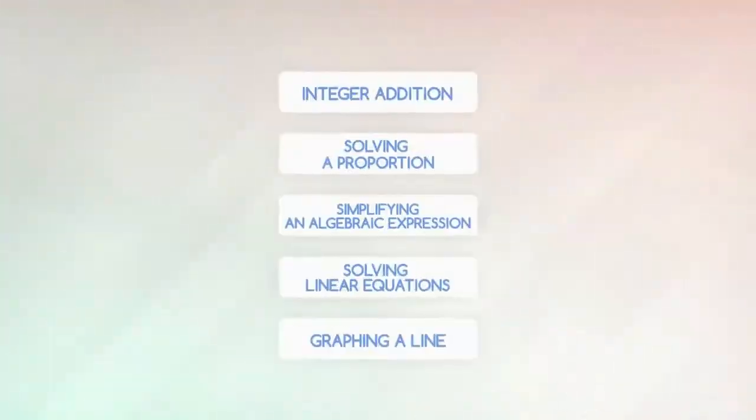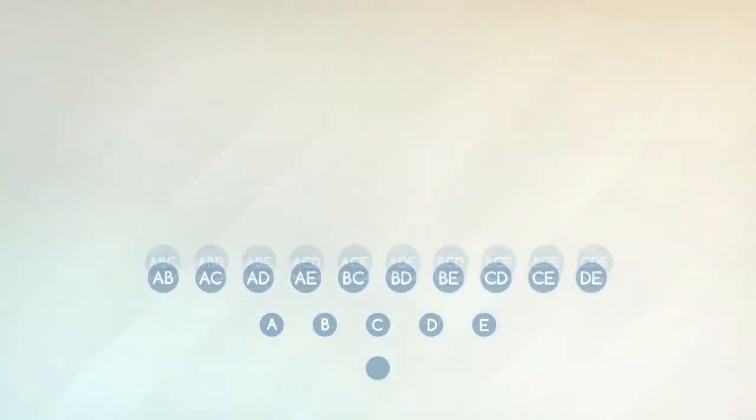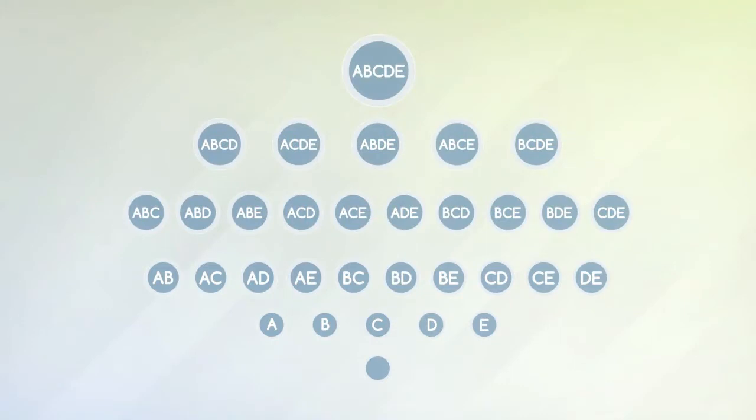let's pretend that instead of consisting of several hundreds of topics, Algebra 1 only consisted of 5 topics. But even with only 5 topics, there are 32 possible knowledge states, or combinations of these topics.